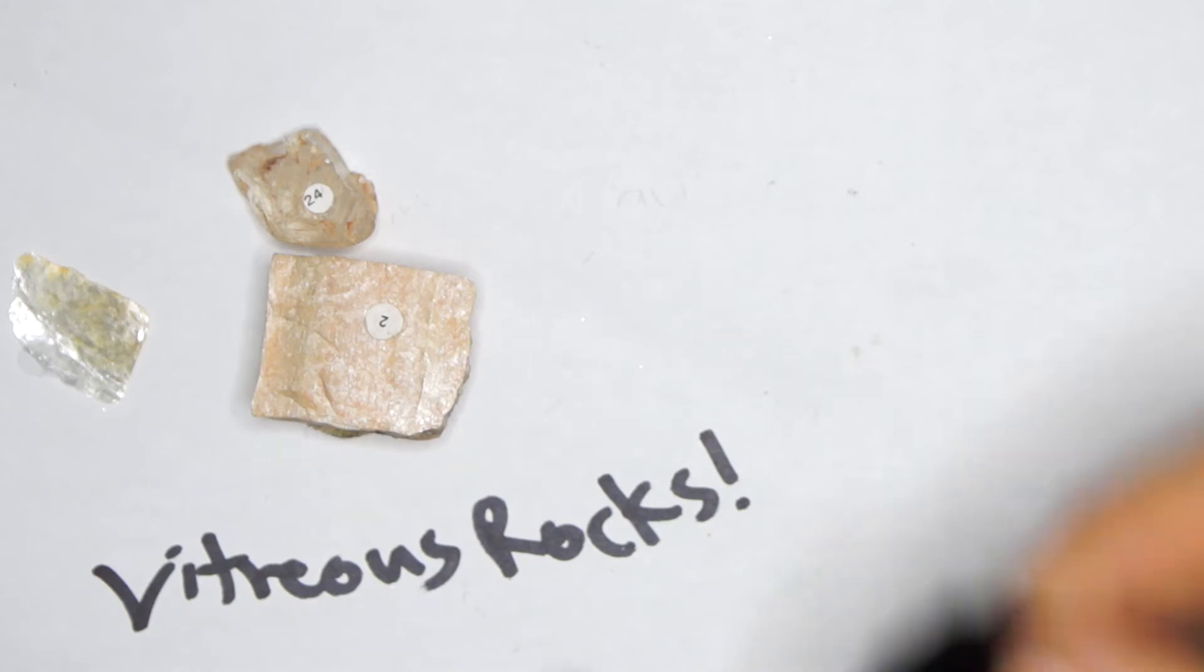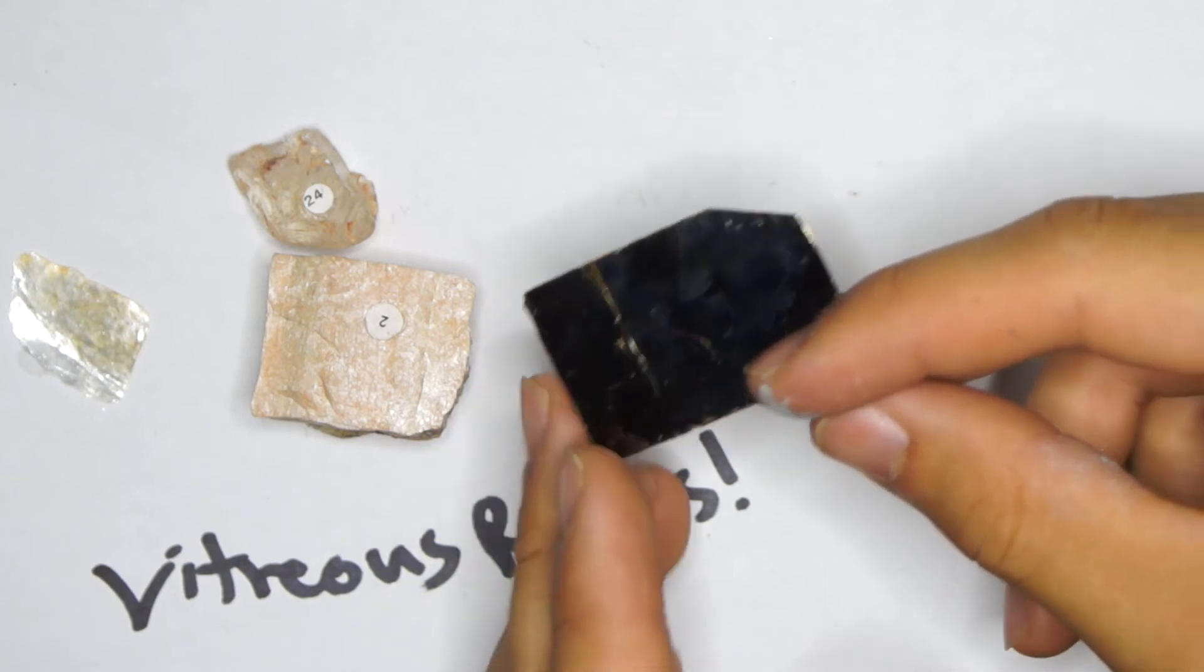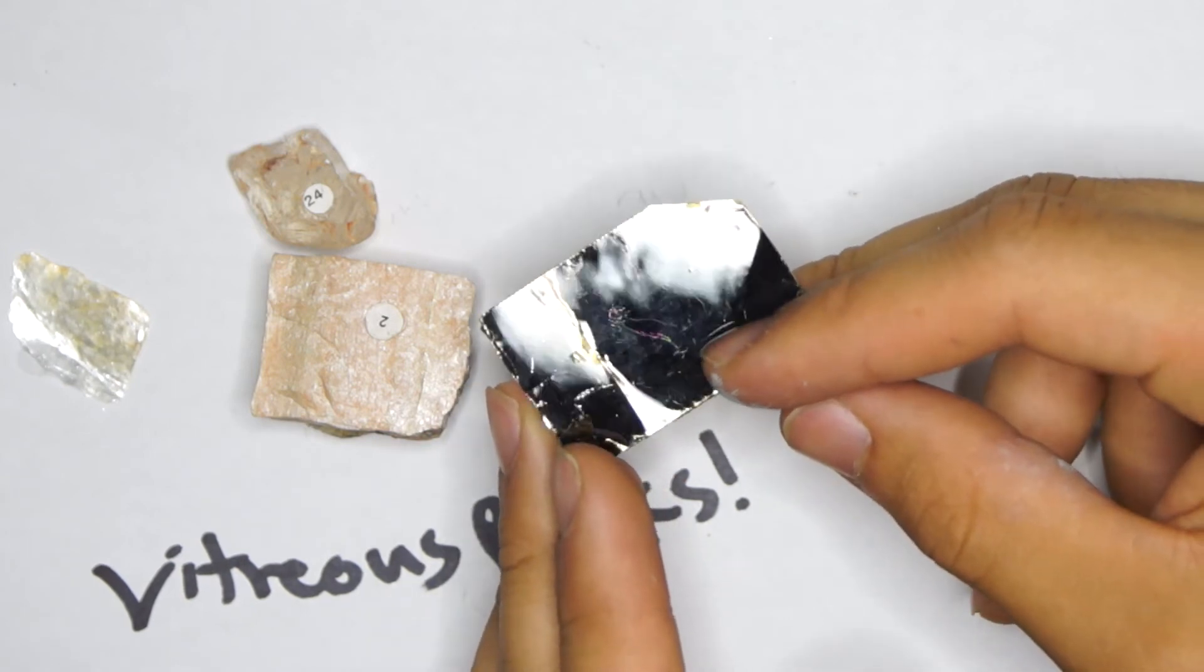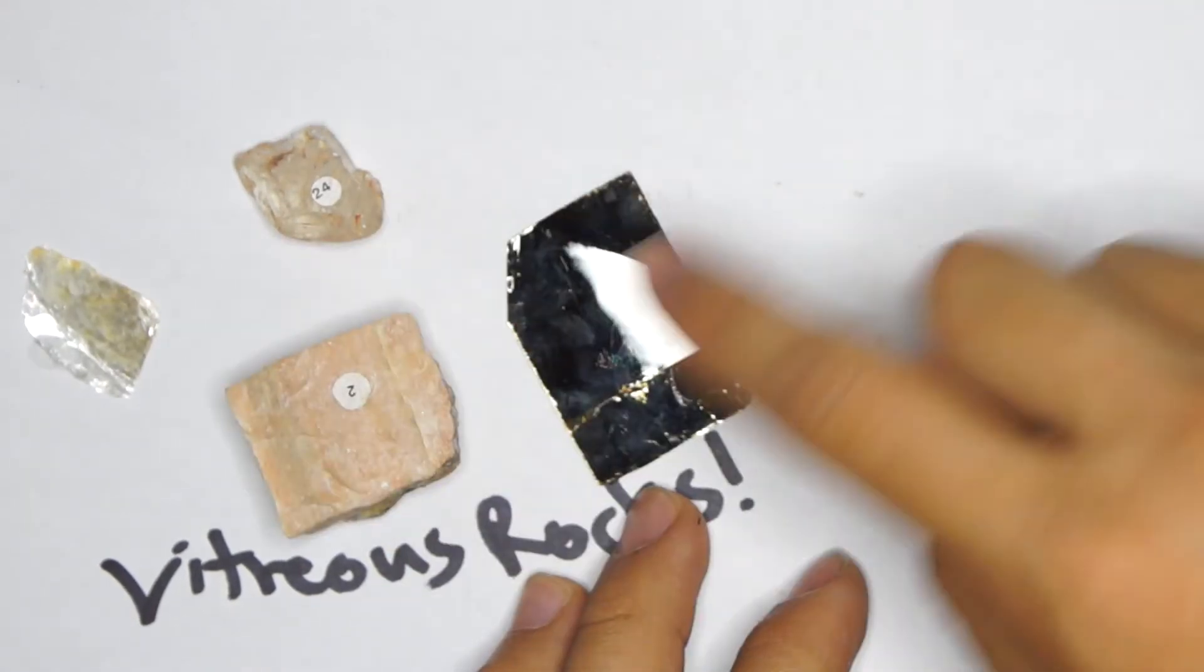Here's another example of a vitreous rock. Looks like broken glass. Once again, this one a little more confusing, but you see that high reflection. It reflects like glass, so that's probably going to be called the vitreous rock. Also, another trick one. This rock is black, but has a reflection like glass, even though you can't see through it. So a vitreous reflection. These are all vitreous rocks.